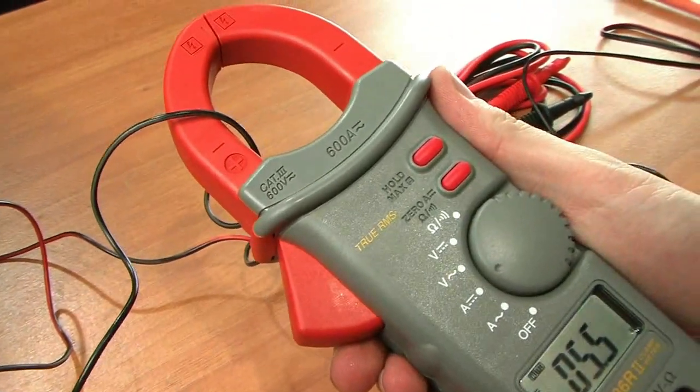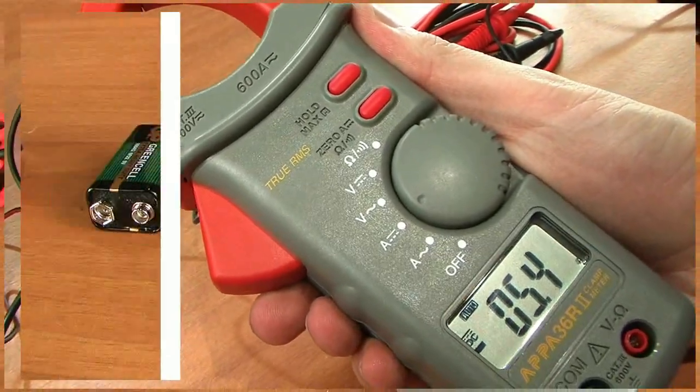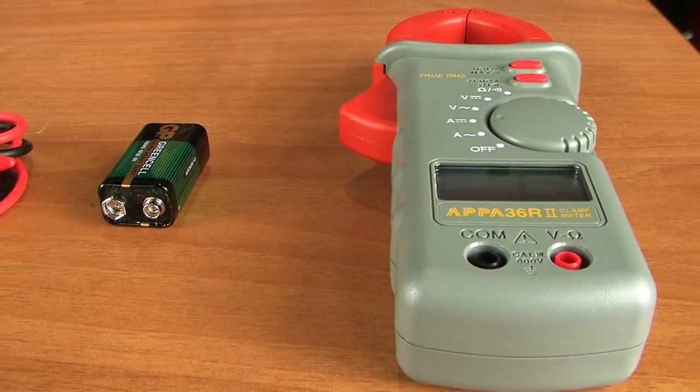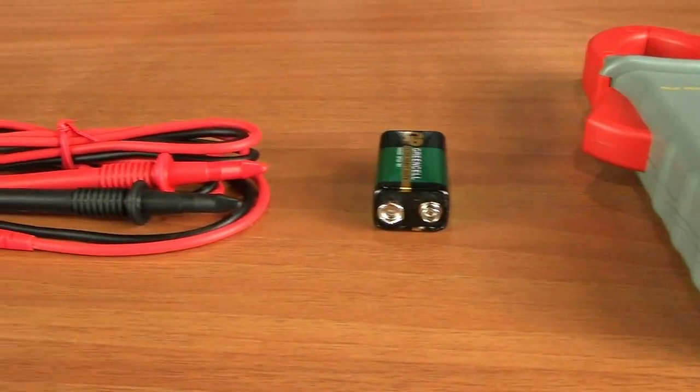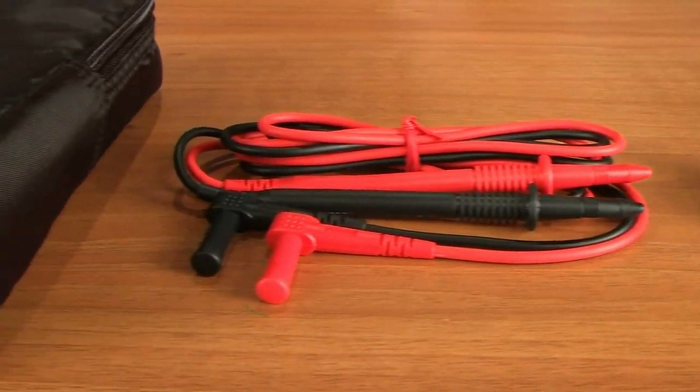The delivery set includes APP A36R2 clamp meter, power battery, set of sensor wires, transportation bag, and a manual.